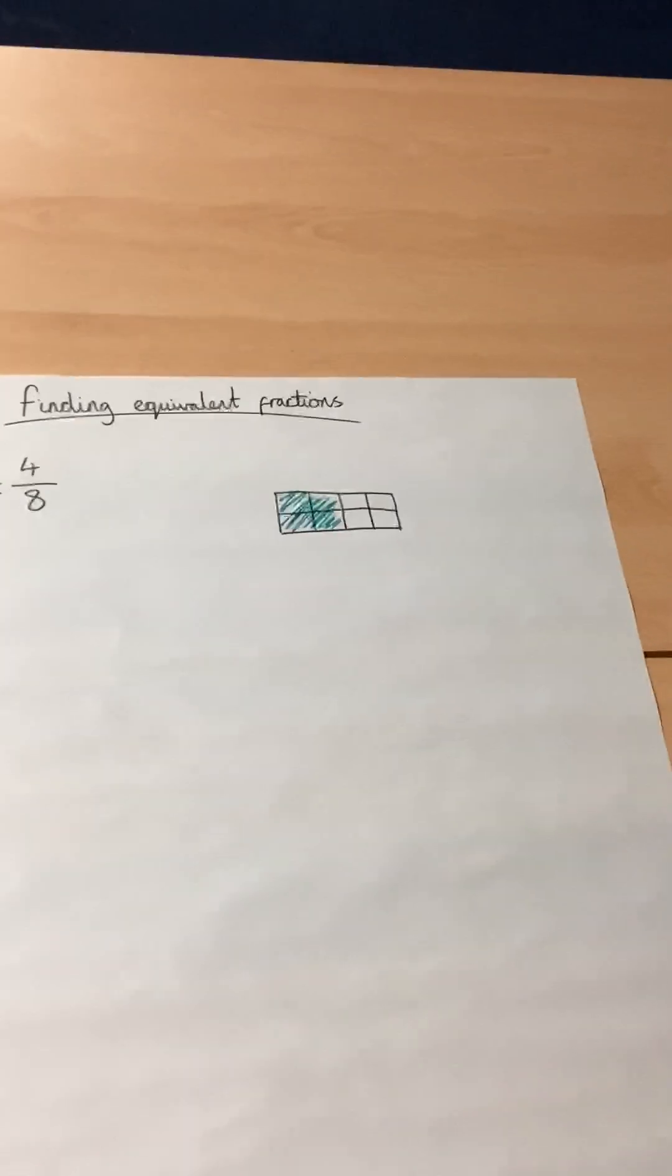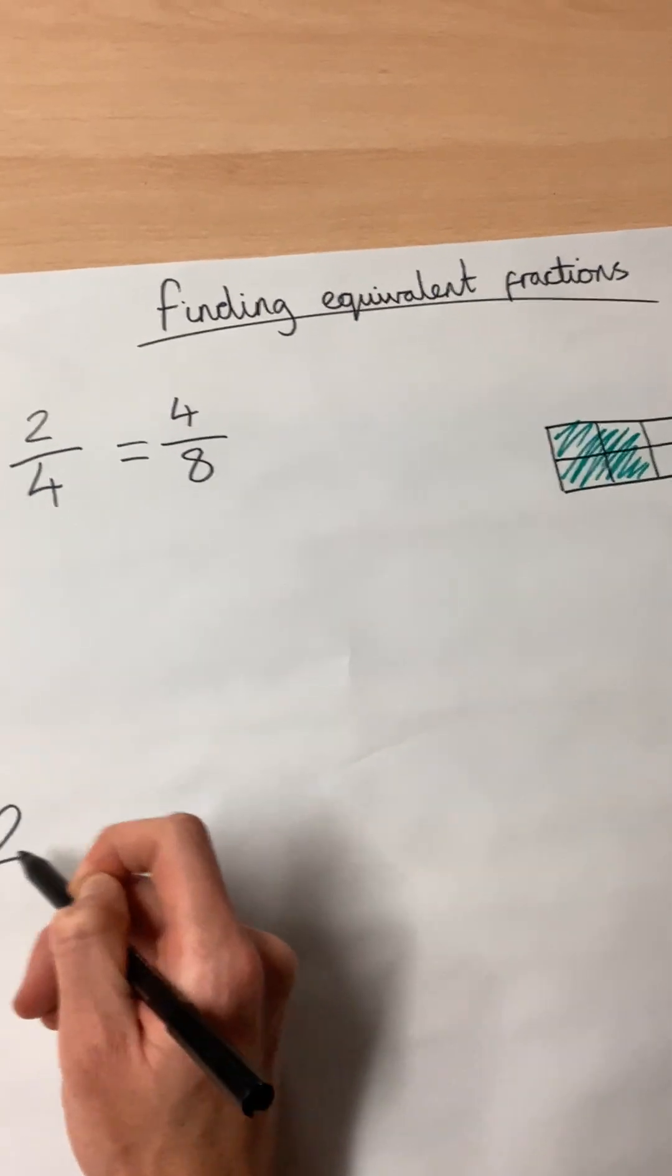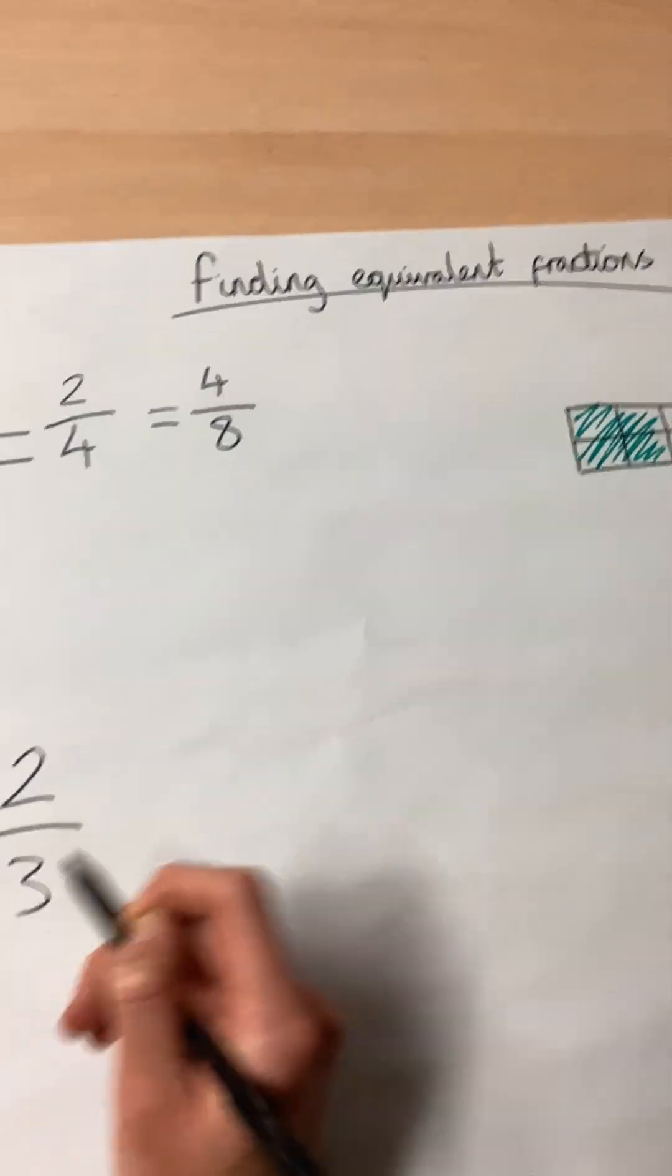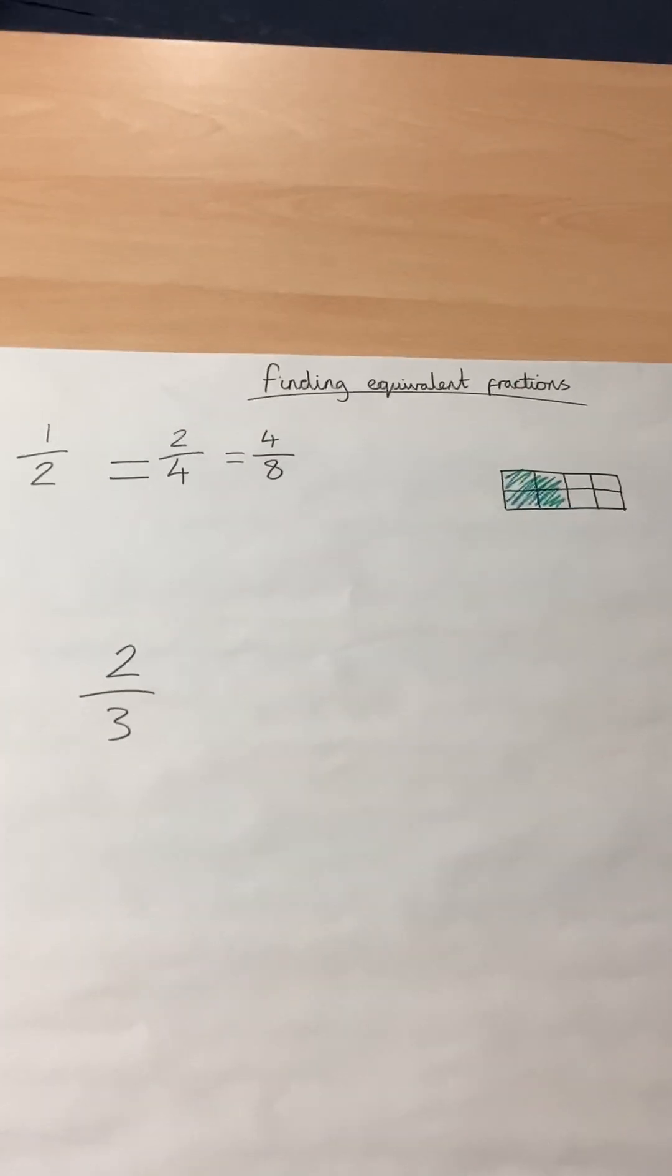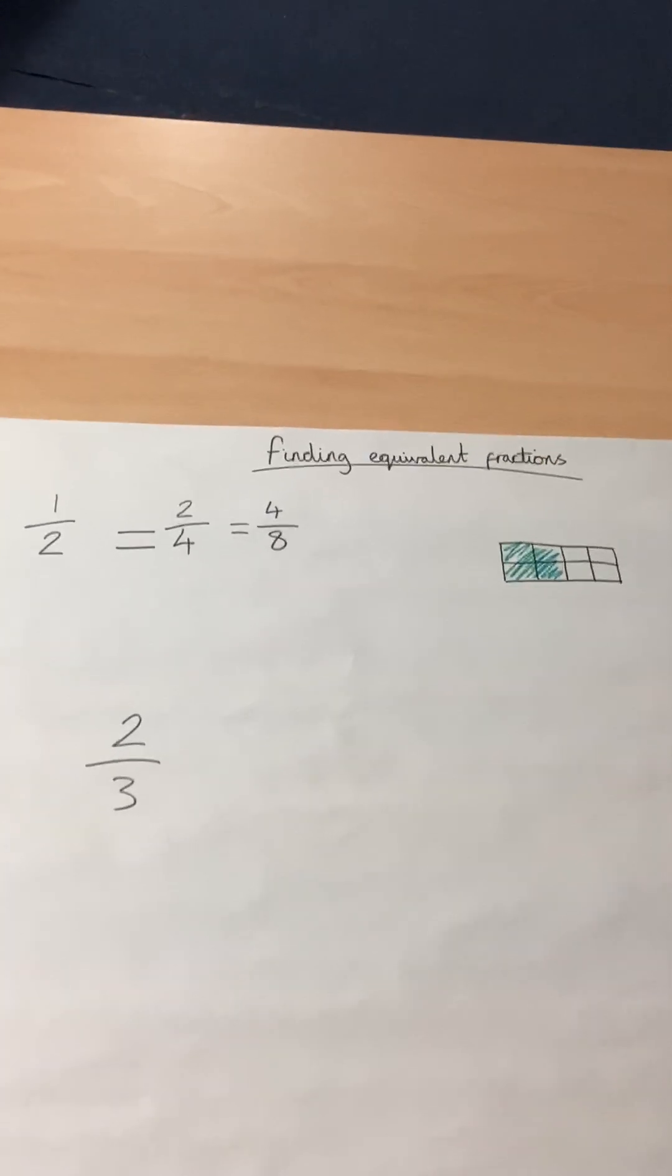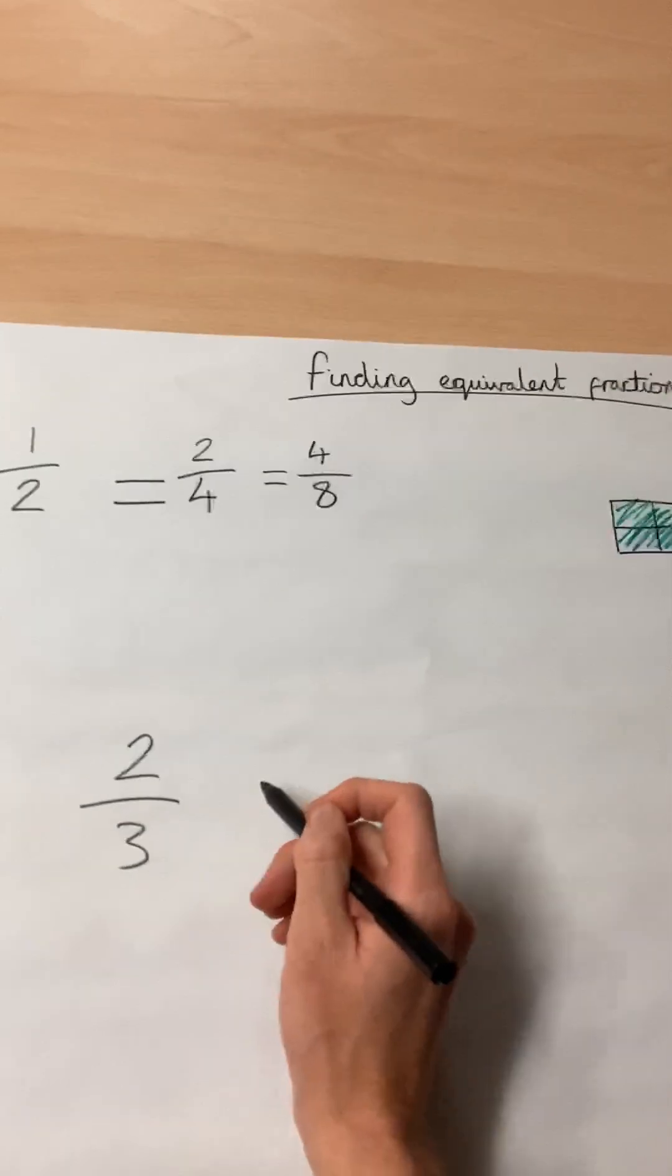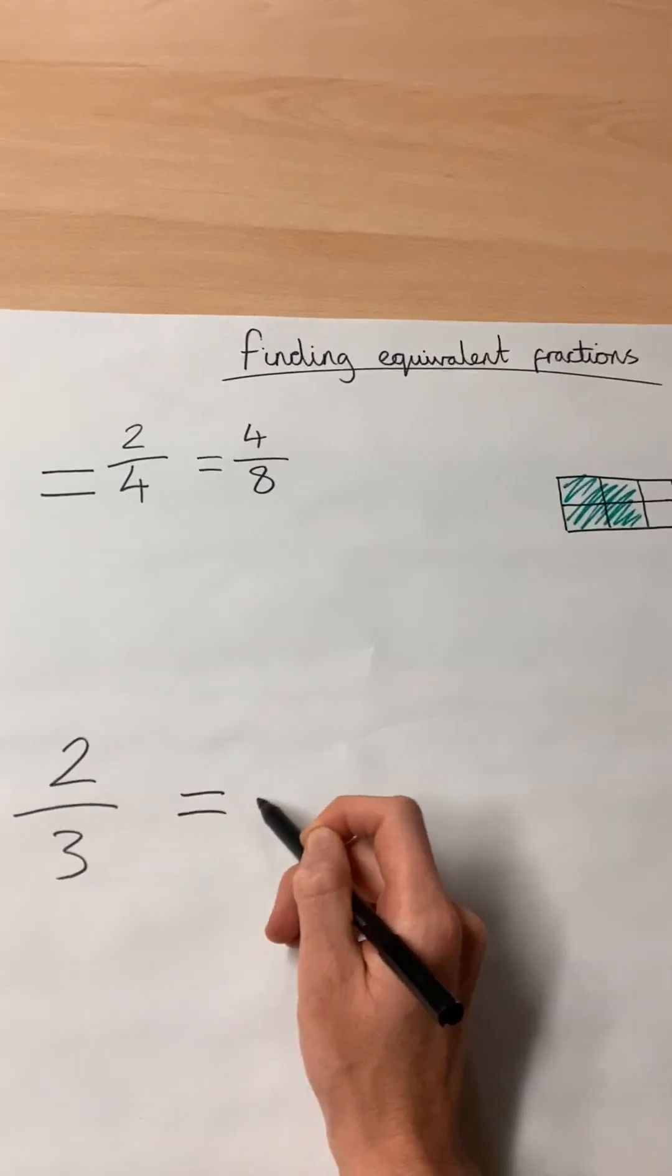For example, if I had two thirds, but the rest of my equation, the rest of my problem involved fractions that are sixths, I would need this to become over sixths so that I could solve this.